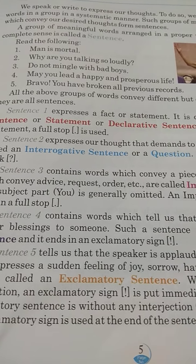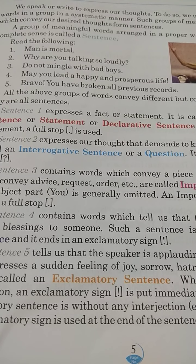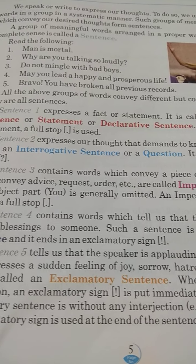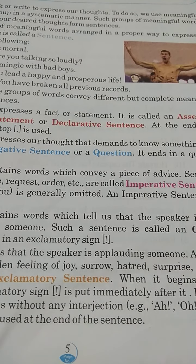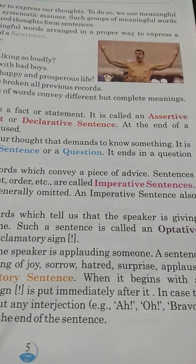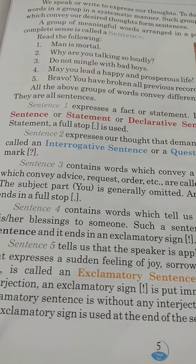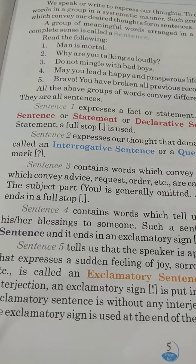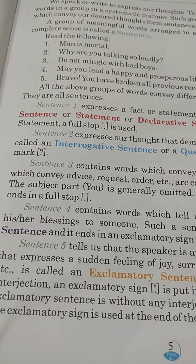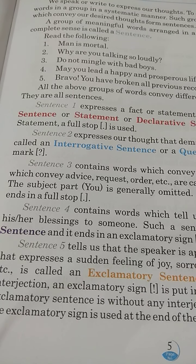Sentence type 1 expresses a fact or a statement. For example, 'Man is mortal.' This is called an assertive sentence, or statement, or declarative sentence. At the end of a statement, a full stop is used. Assertive sentences are those sentences which express a fact or statement.